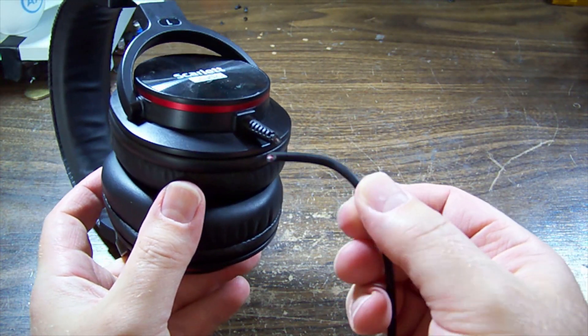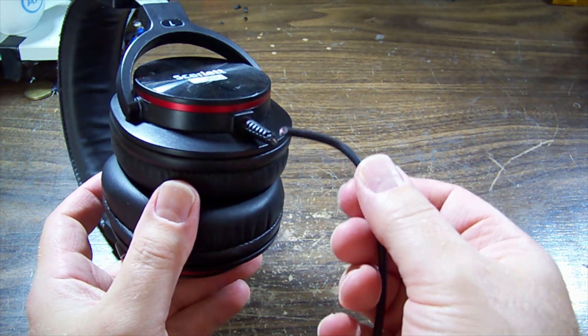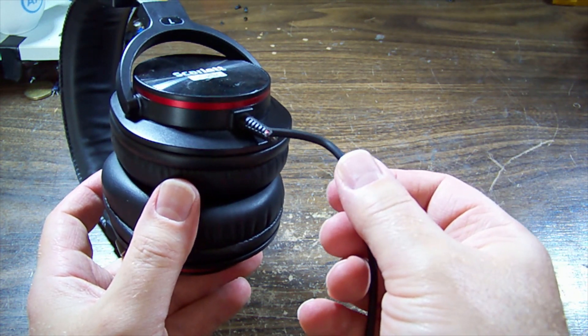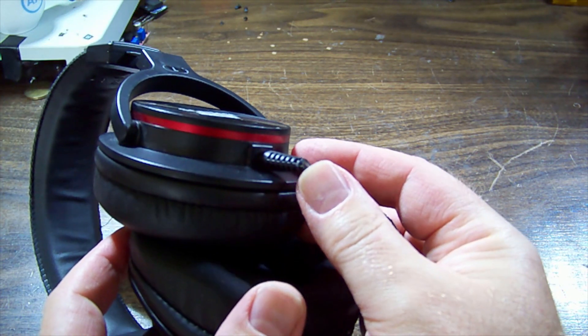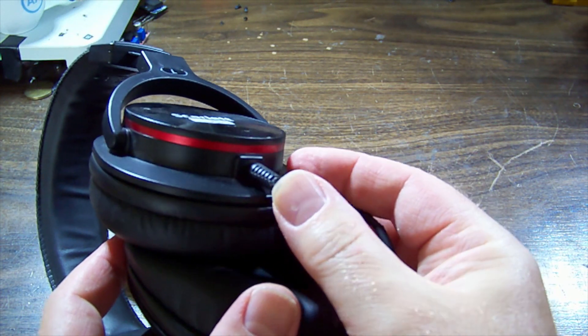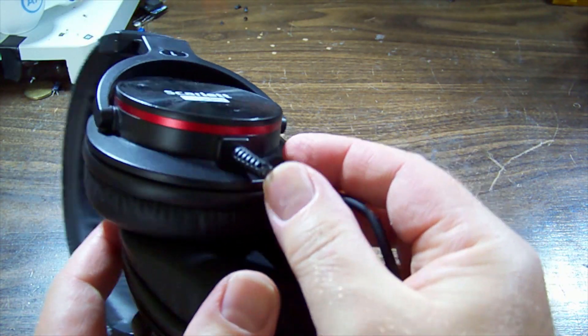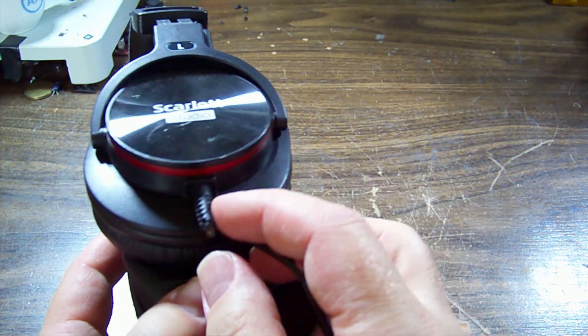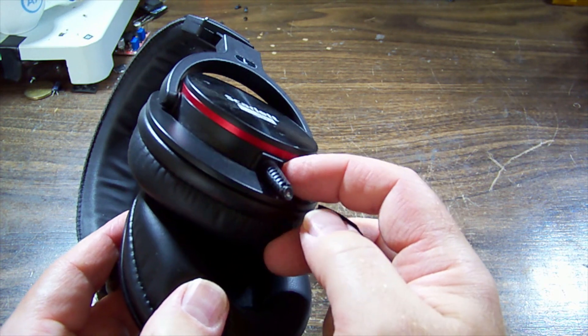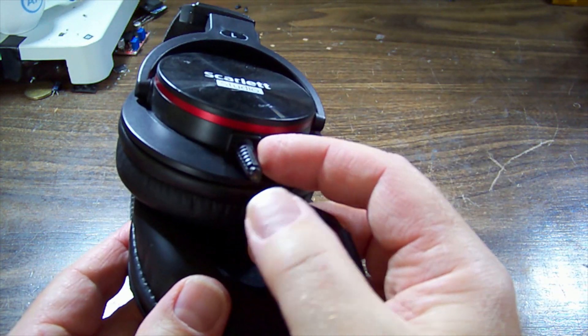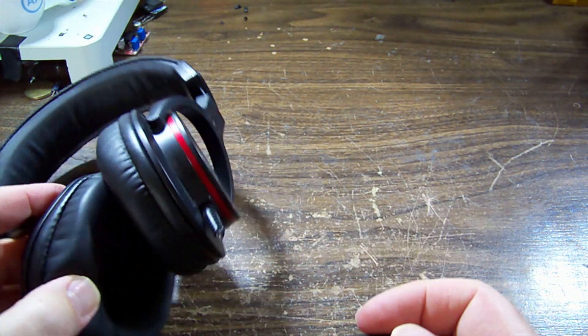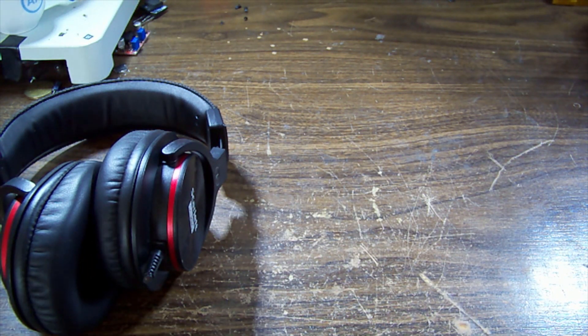Kind of annoying to have it chomped off right where it enters through the little strain relief flex there, but maybe we can pull the old one through and keep, reuse this little strain relief, because it does go into a square hole. We'll see what we can do.